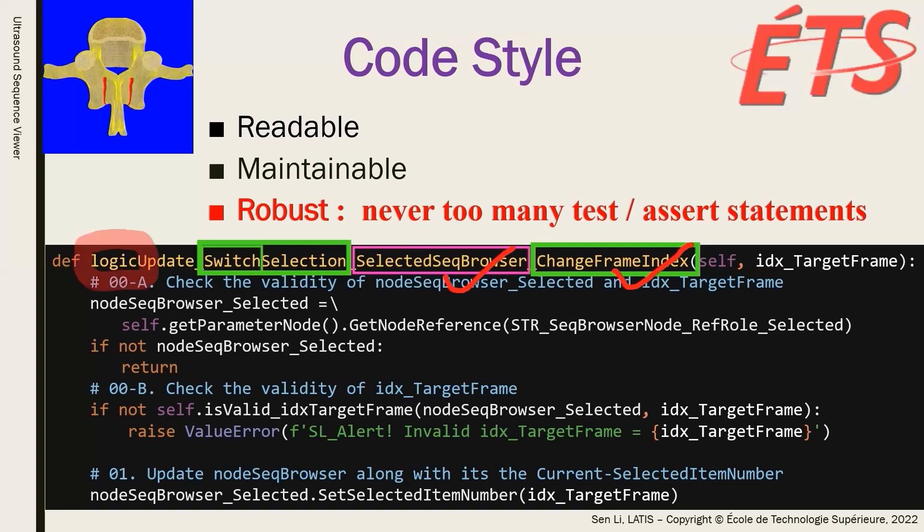To make the selection switch work outside our module, this function only updates the back-end data without any change in the user interface. To achieve the objective of this function, we simply need one statement. To set the selected item number of the active sequence browser nodes. But you can see that this function checked the validity of both sequence browser nodes and the index to update, just to make this function robust.